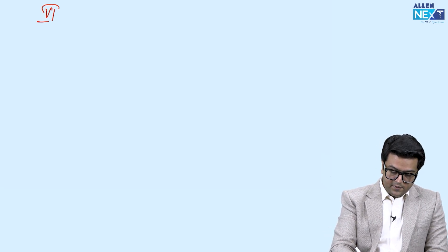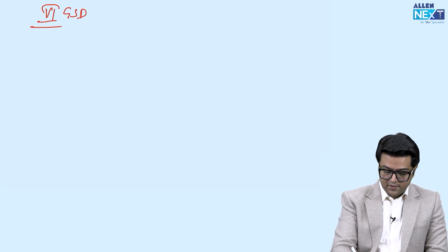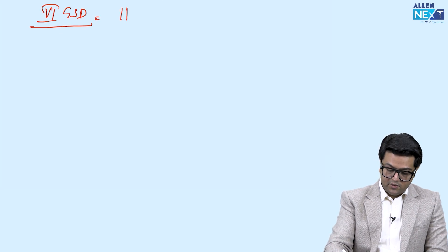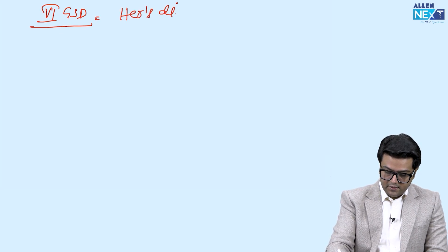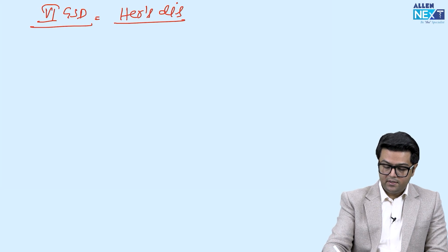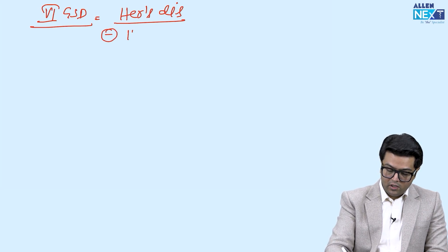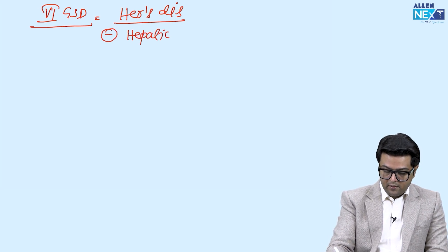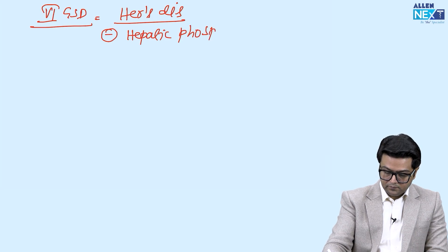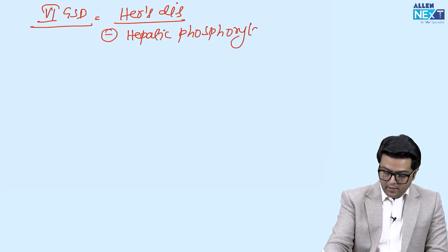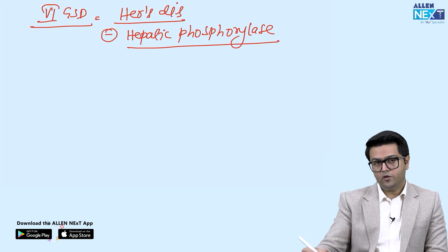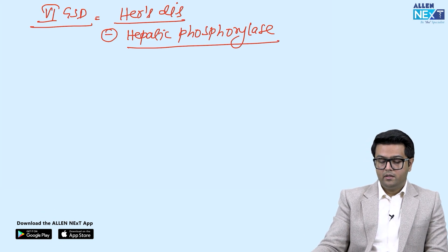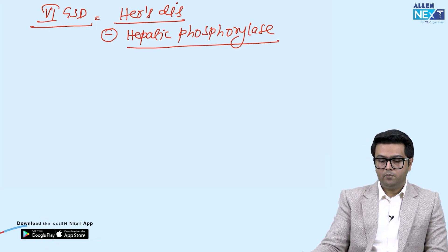But the last one is type 6 GSD, which is a very mild disease that is called Hers disease. In the Hers disease, there is a deficient enzyme that is called hepatic phosphorylase.